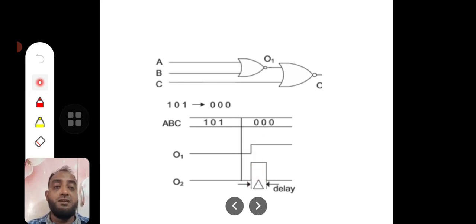Because the output is going high, both the inputs are high - one and one. That is why output O2 is shifting to high, and after a delay, the output is coming back to zero.